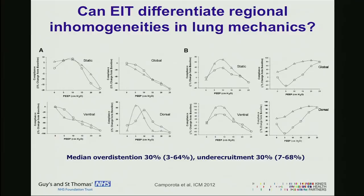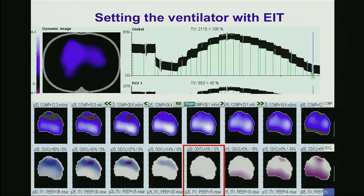We can also do this at the bedside. This is another of our patients with a recruitment manoeuvre going from PIP 30 to PIP 5. You can see the tidal changes in volume, and also the labels OD — overdistended — and collapsed. At PIP 30, about 15% of the lung is overdistended and zero is collapsed. We can go all the way down until we find the PIP where there is minimal overdistension and minimal collapse — in this case, a PIP of 20.